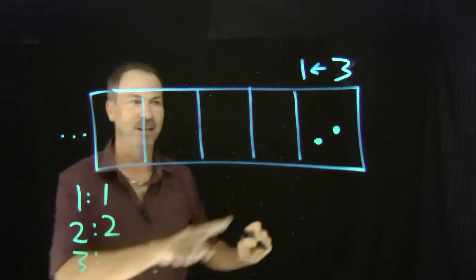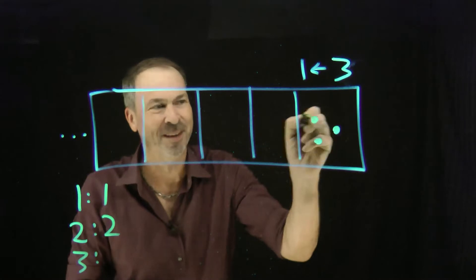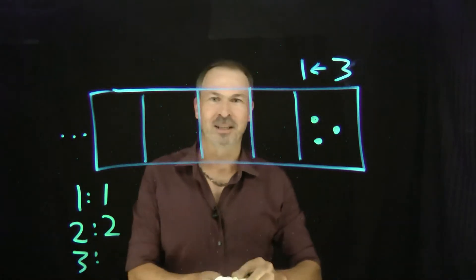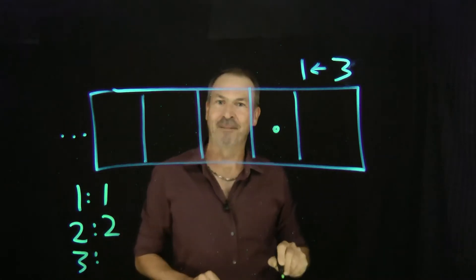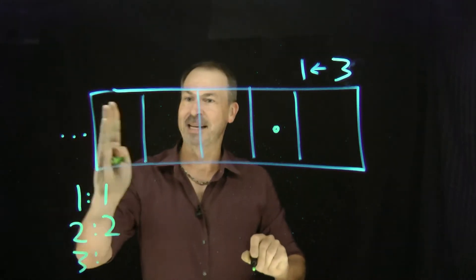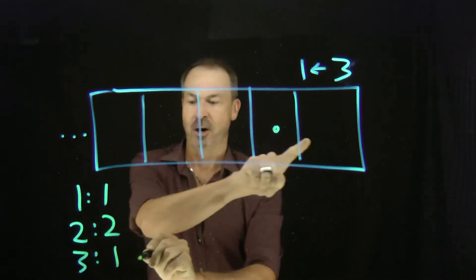Okay, here comes that third dot, always the rightmost box. Now I've got three dots in the box. They explode. Kaboom! To be replaced by one dot one place to the left. So my code for three is nothing, nothing, nothing, nothing. One dot, zero dots.